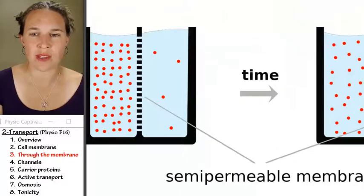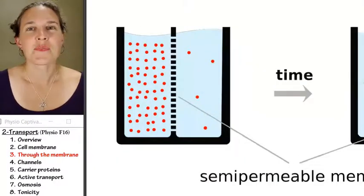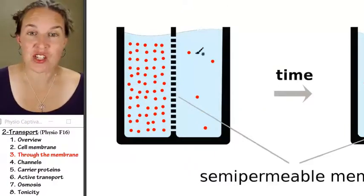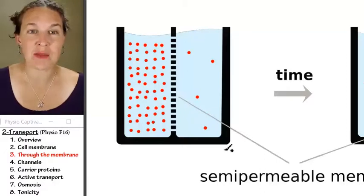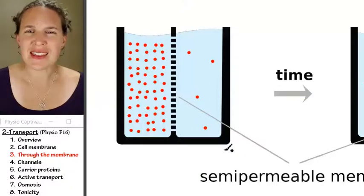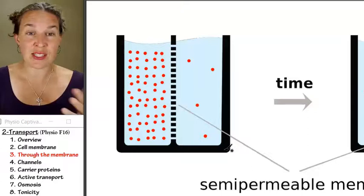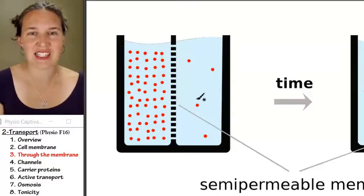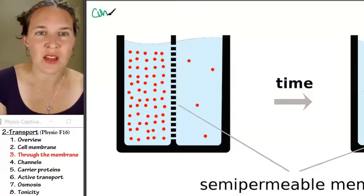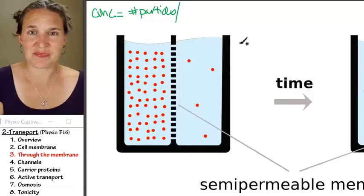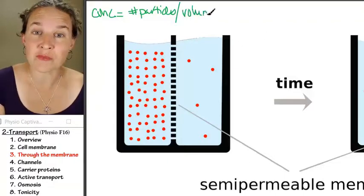So ignore the semipermeable membrane in the middle. Diffusion is the movement of molecules from a high concentration to a low concentration. The semipermeable membrane in the middle is optional. Diffusion can happen through a semipermeable membrane. But in order to think about diffusion, I just said we're talking about a high concentration to a low concentration. And let's take a second to define concentration. Concentration is nothing more than the number of particles